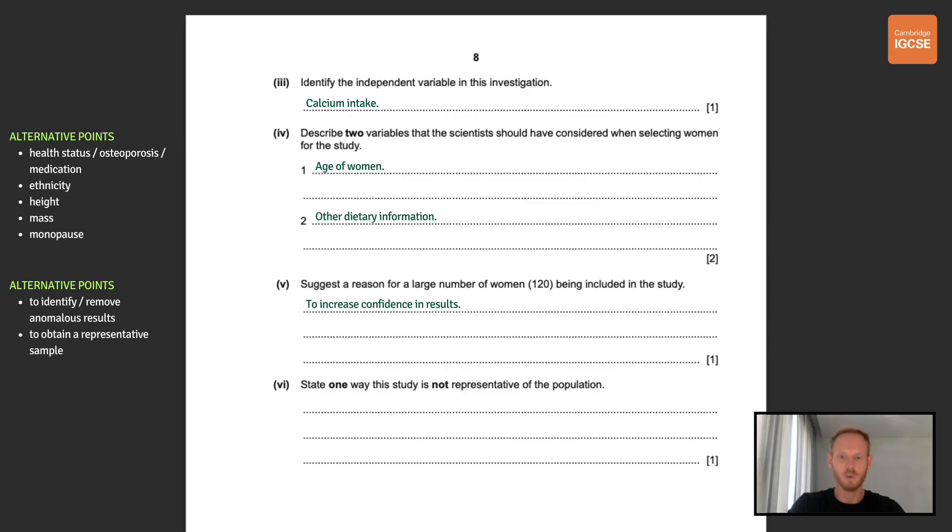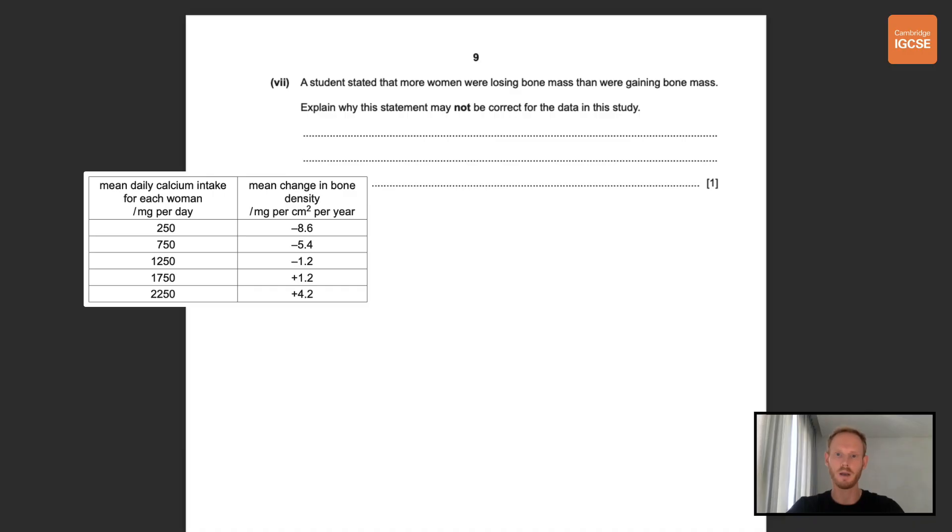Now this final point relates to the next question which is to state one way this study is not representative of the population and the point that I've gone for here is that it only studies women so it tells us nothing about the effect of calcium intake on bone density in men. It also only studies the 50 to 70 age range so tells us nothing about the youth or the elderly. Okay a student stated that more women were losing bone mass than were gaining bone mass. Explain why this statement may not be correct for the data in this study. And this is because the number of women in each calcium intake category is unknown so it's possible that there were actually way more women in the groups that gained bone density than in those that lost bone density.